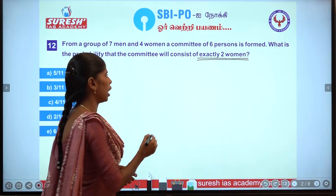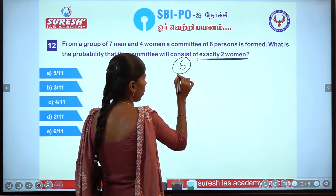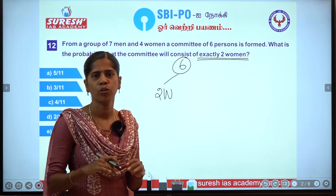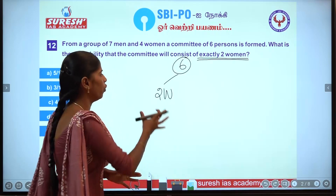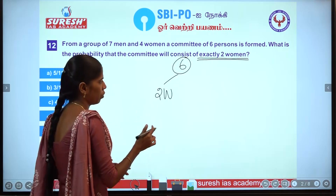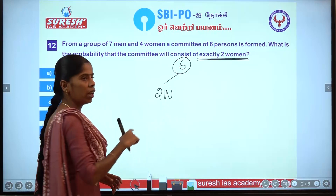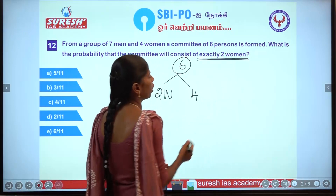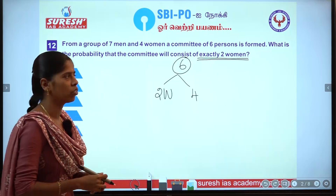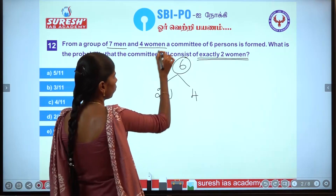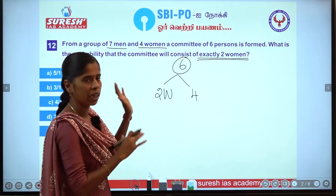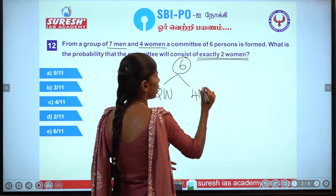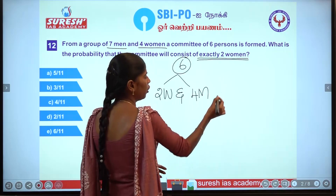We need exactly 2 women in a 6-member committee. So we select 2 women from 4 women and 4 men from 7 men. The number of ways to select 2 women is 4C2, and 4 men is 7C4. We compute 4C2 = (4×3)/(2×1) and 7C4 = (7×6×5×4)/(4×3×2×1), all divided by 11C6.